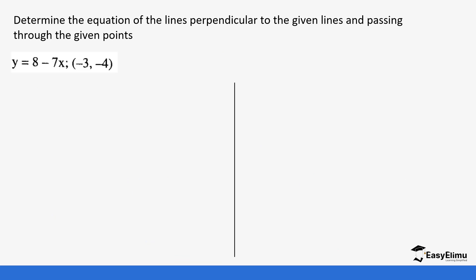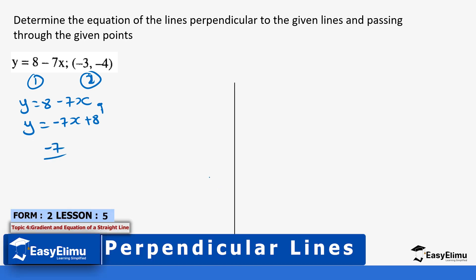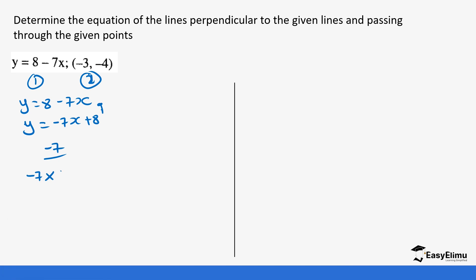Let's do one more question. The first line has equation y equals 8 minus 7x. Rewriting in the form y equals mx plus c gives y equals negative 7x plus 8, so the gradient is negative 7. If we multiply negative 7 by the gradient g of the second line, we must get negative one. So negative 7g equals negative one; dividing both sides by negative 7 gives g equals one-seventh, which is the gradient of the second line.